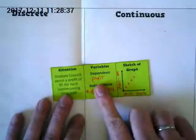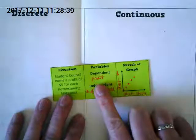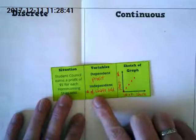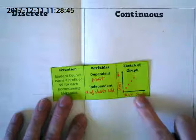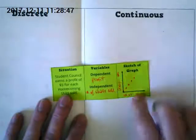So the dependent is the profit. Money is always dependent if it's there. The number of shirts is the independent. So to graph it, you're going to put the number of shirts on the x-axis, cost on the y.